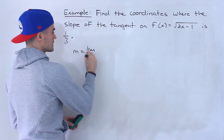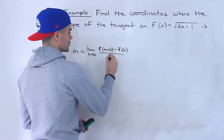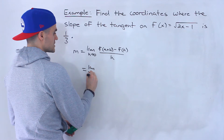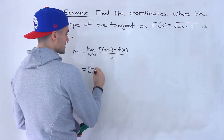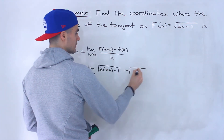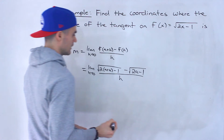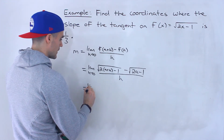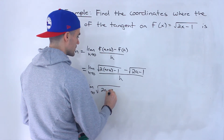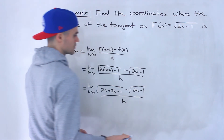So we're going to find the general expression for the slope of the tangent using the difference quotient, like we did in the previous example. We'll have the limit as h approaches 0. For f of a plus h, we plug in a plus h for x. Then we subtract f of a, so we have the square root of 2a minus 1, all over h. Expanding, we get the square root of 2a plus 2h minus 1, minus the square root of 2a minus 1, all over h.